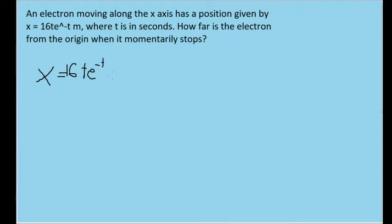Now we want to know where the electron is on the x-axis, specifically how far it is from the origin when it briefly stops. And the first thing we want to do is find out when exactly that electron is going to briefly stop.